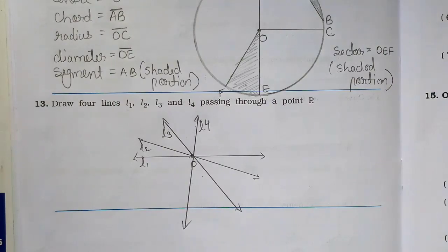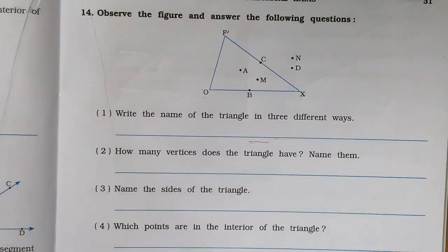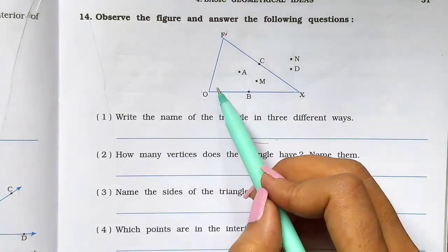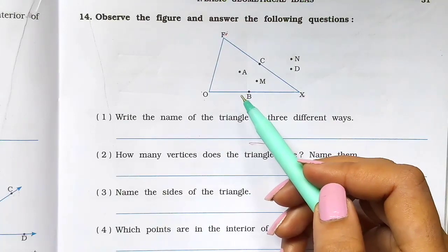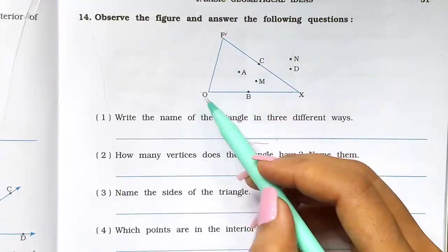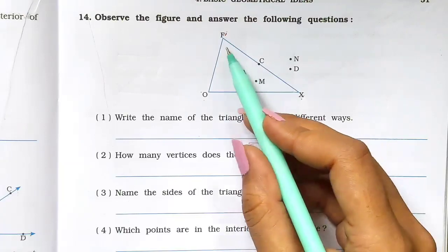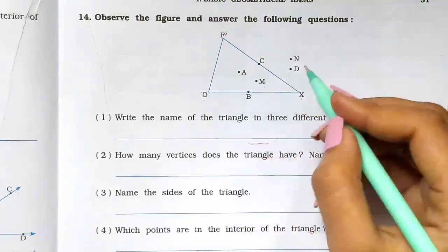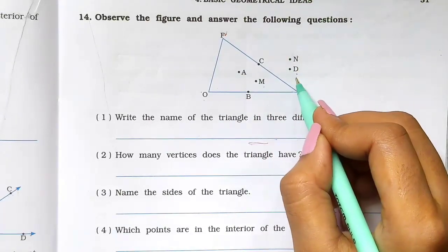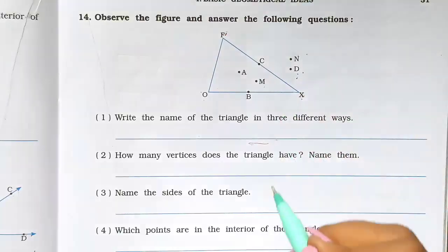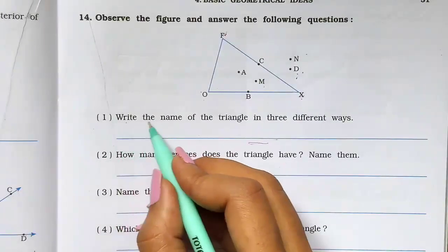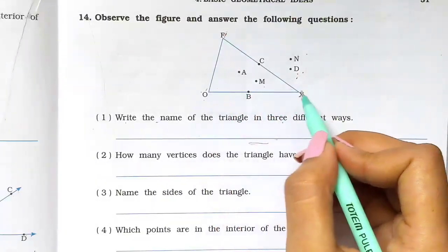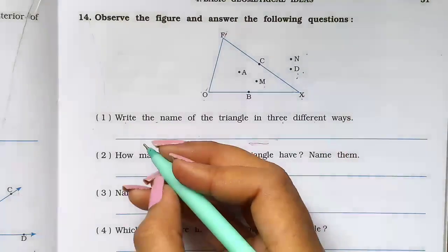Then next question, number 14: Observe the figure and answer the following questions. The figure given has a triangle FOX. On the triangle there are two points C and B. Interior points are A and M. Exterior points are N and D. Following this, write the name of the triangle in three different ways.